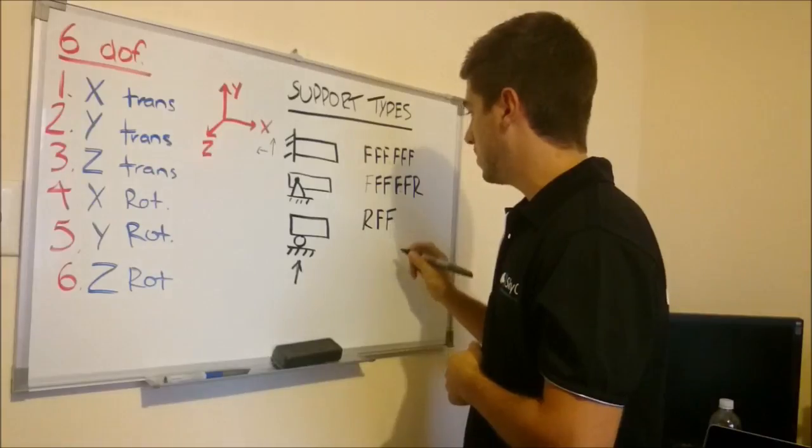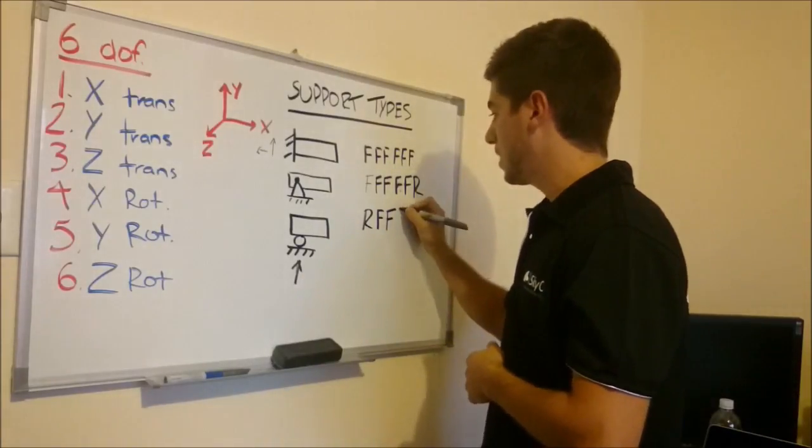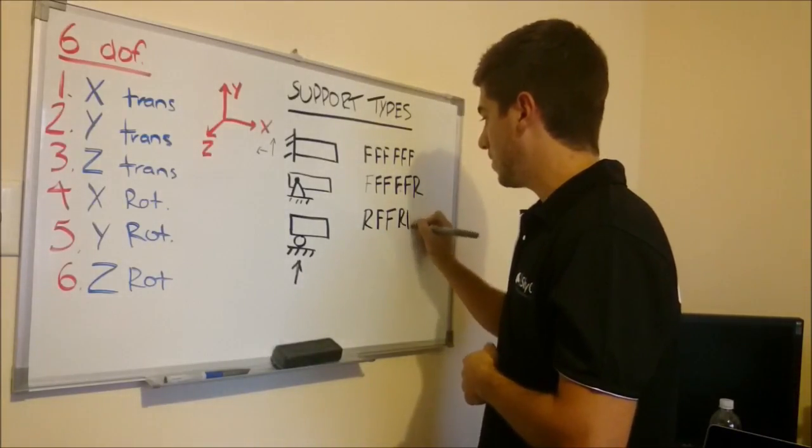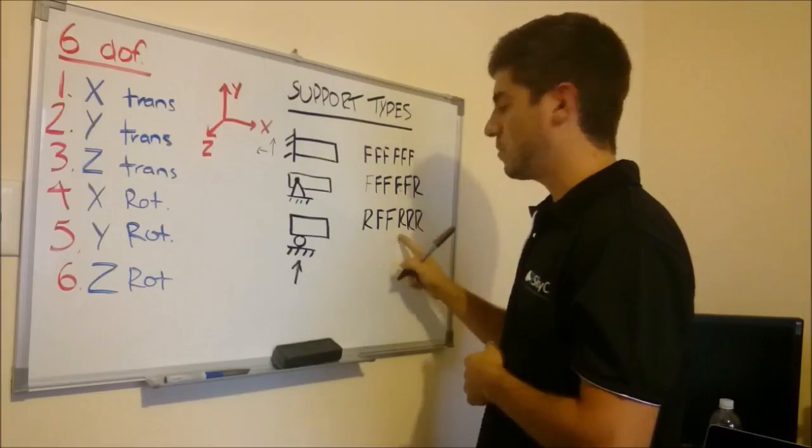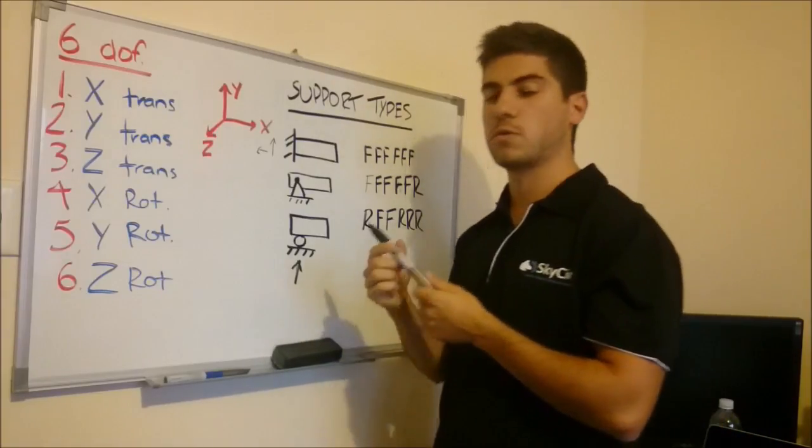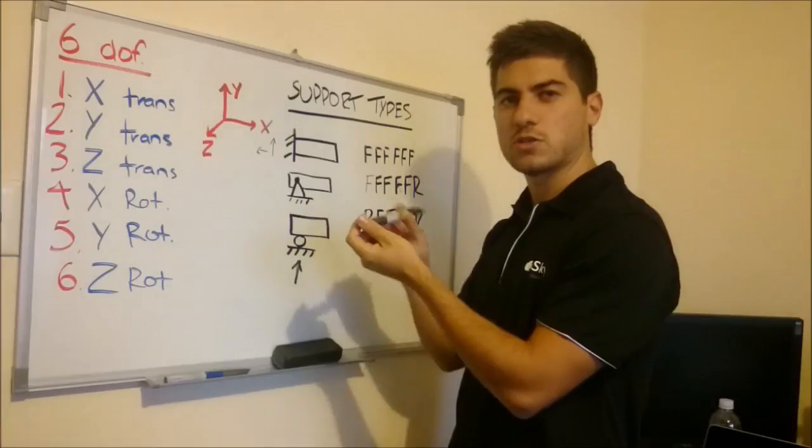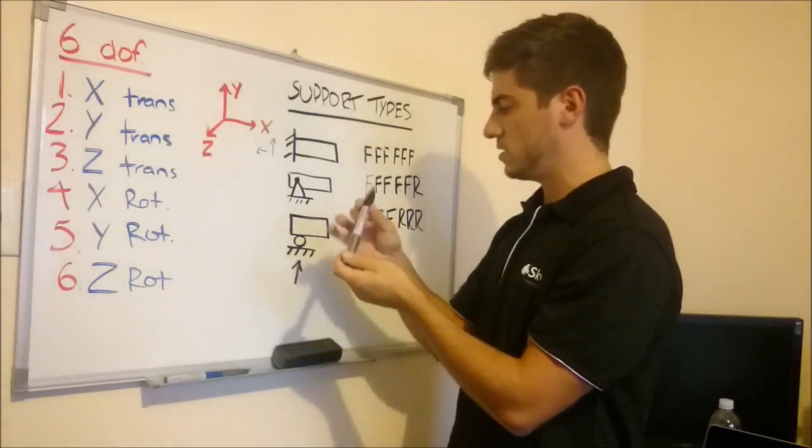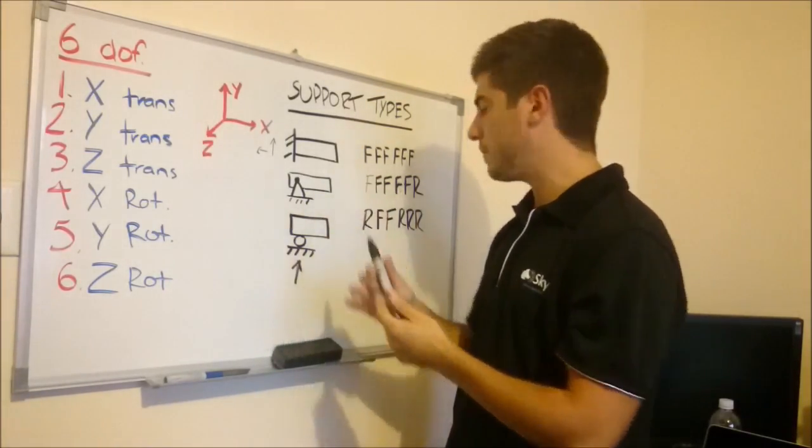Likewise in the Z, it's going to be fixed. And then, it's going to be released in all 3 rotations. So if you just picture a ball with a socket joint, it's able to rotate about any axis. So you can just move around like that.